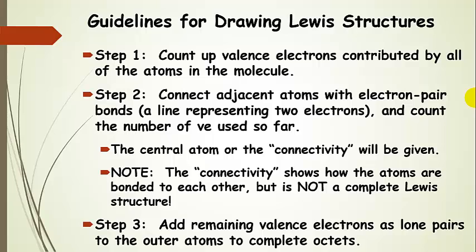In step 2, we're going to connect all of the adjacent atoms together with a bond, and that bond is going to represent two electrons. After we do this, we're going to count up the number of valence electrons we've used so far. You'll either be told the central atom, or some sort of connectivity for a larger molecule will be given, and then you would just be completing that Lewis structure.